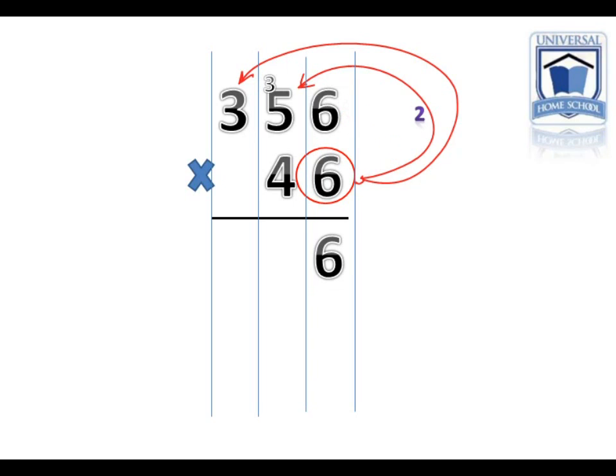Step 2. 6 times 5 equals 30, plus that 3 is 33. So we put the 3 down, and now we're going to carry the 3 over.